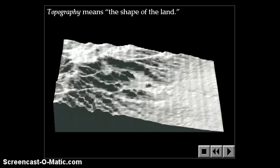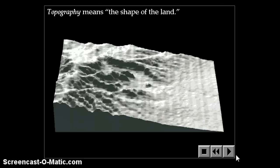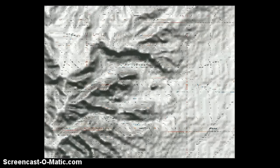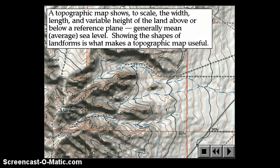Topography means the shape of the land. It's an important vocabulary word this unit. A topographic map shows, to scale, the width, length, and height of the land above or below a reference plane, usually mean or average sea level. Showing the shapes of landforms is what makes a topographic map useful.